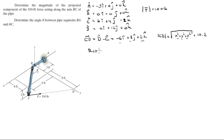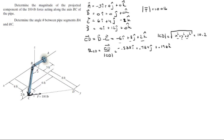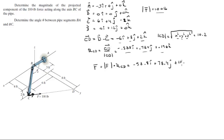So the unit vector CD is found by dividing the vector CD by its magnitude, and this is equal to negative 0.588i plus 0.784j plus 0.196k. Now that you have this unit vector — this tiny vector with a magnitude of 1 — you can find the Cartesian vector form of F by multiplying the magnitude by the unit vector it acts along. Multiplying those values gives you F equal to negative 58.8i plus 78.4j plus 19.6k.